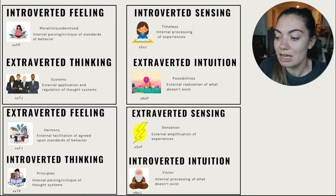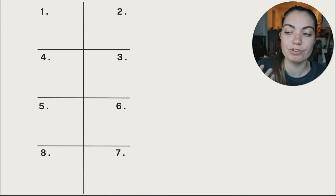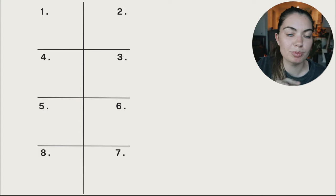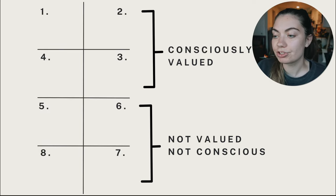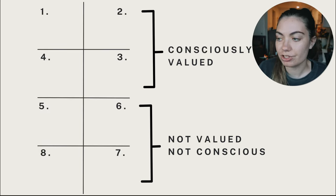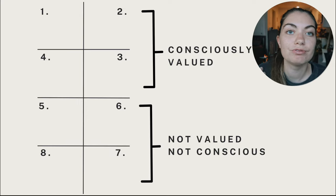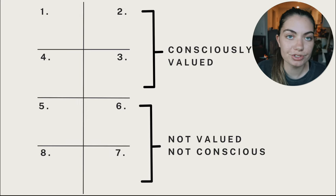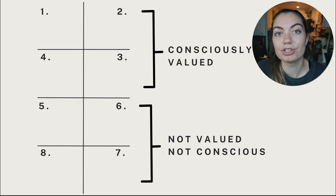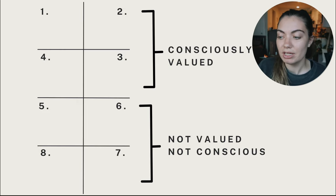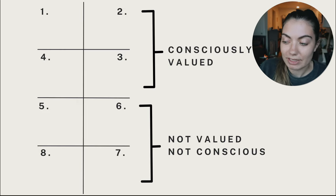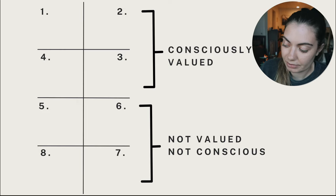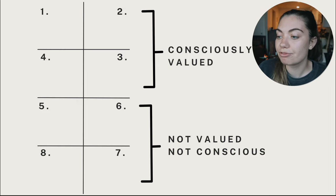Everyone has eight cognitive functions used in very specific ways. Your top four cognitive functions you're conscious of and you value them — you're aware of yourself using them, even if you're not yet good at them. The bottom four you don't tend to value by default and you're not necessarily conscious of them.